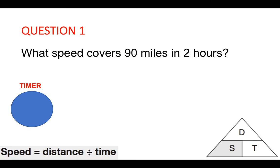Question one. What speed covers 90 miles in two hours? Speed equals distance divided by time. What speed covers 90 miles in two hours? Put your answer in the comments section below.